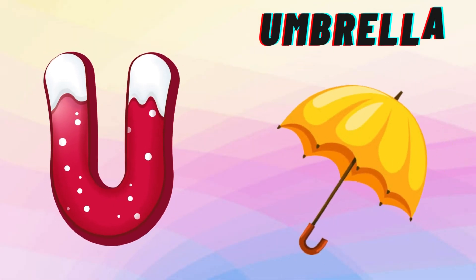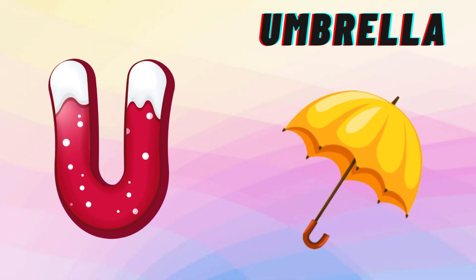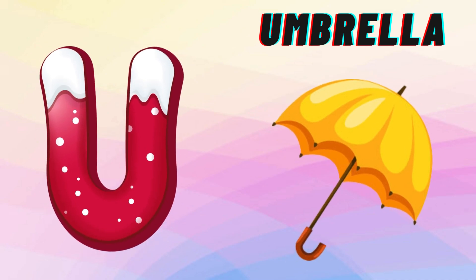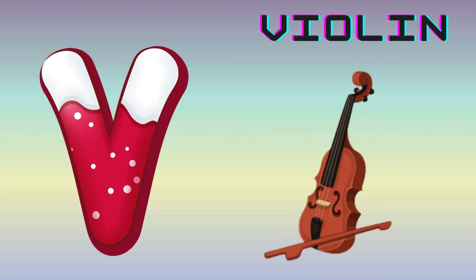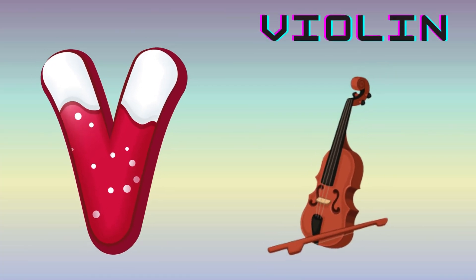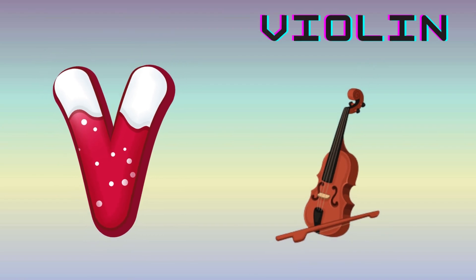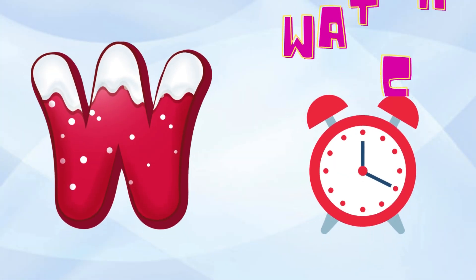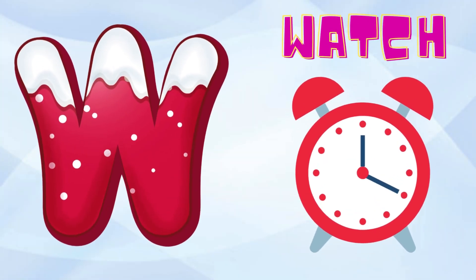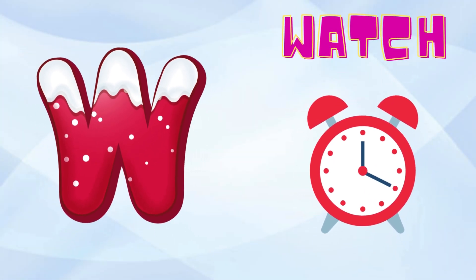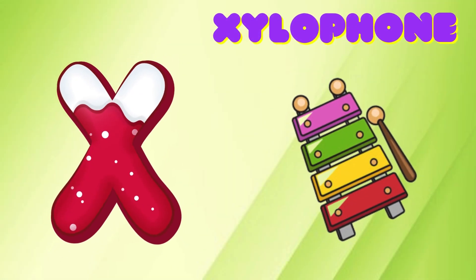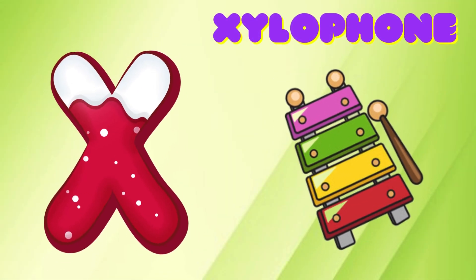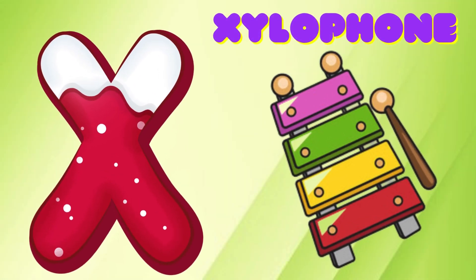U is for Umbrella, U-U-Umbrella. V is for Violin, V-V-Violin. W is for Watch, W-W-Watch. X is for Xylophone, X-X-Xylophone.